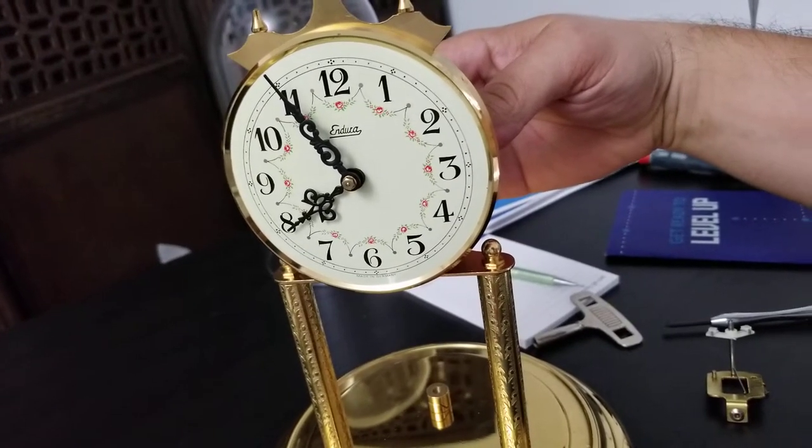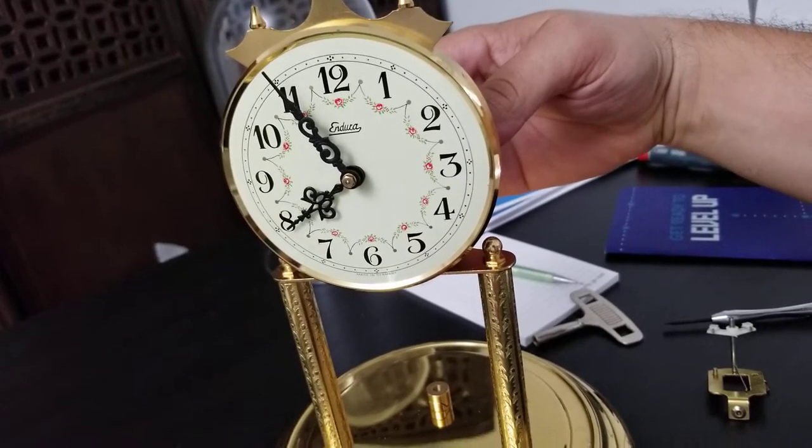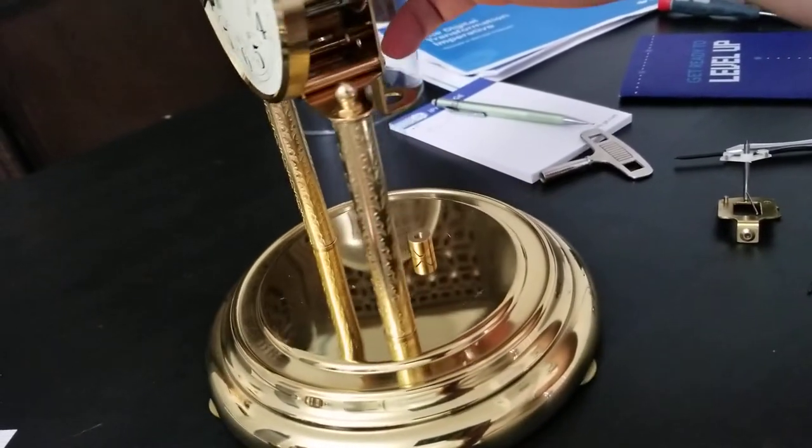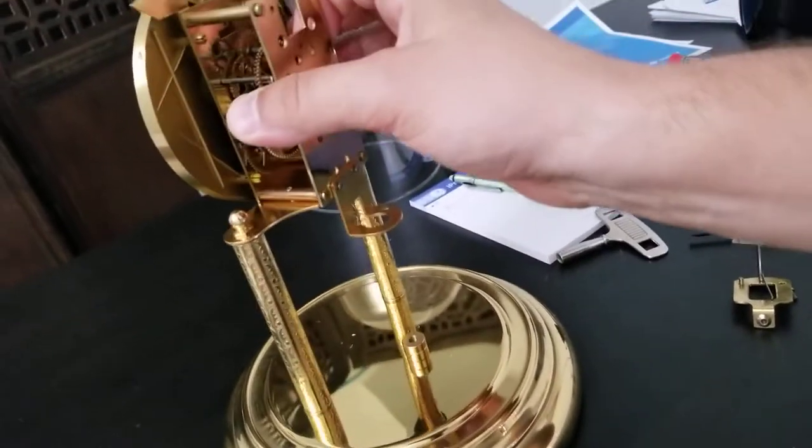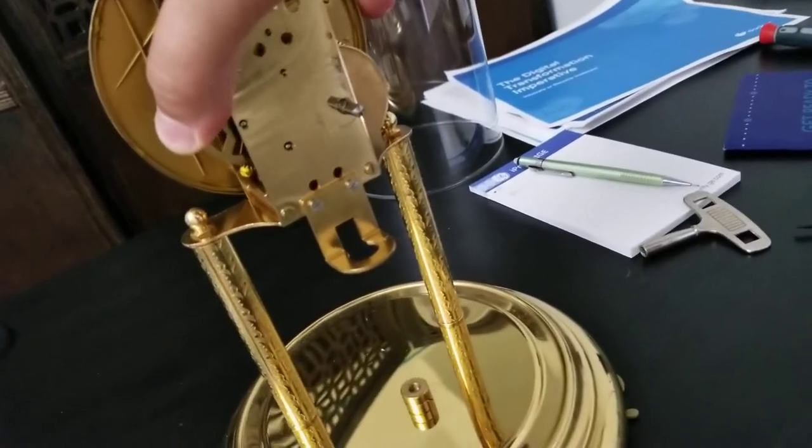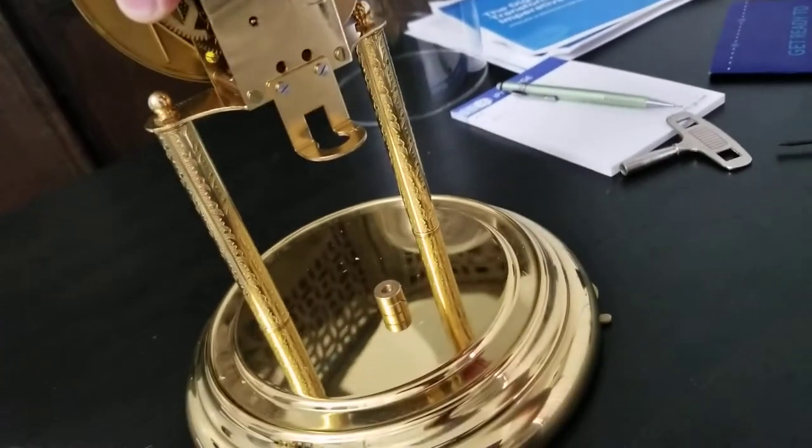So this is an anniversary clock that I'm fixing for my mom. It's called an anniversary clock because on the back here, once you wind this baby up, it lasts apparently up to one year without you having to wind it.